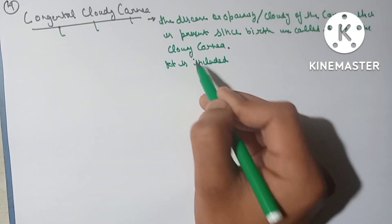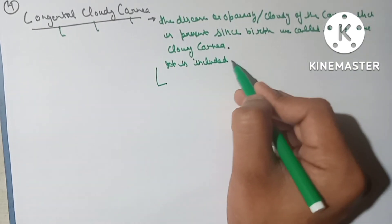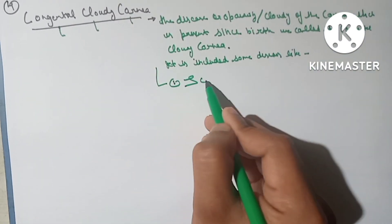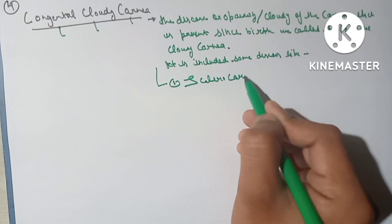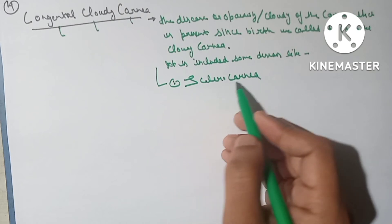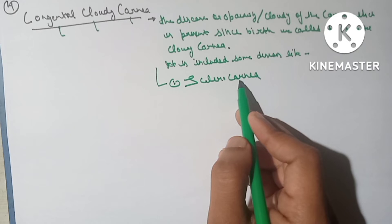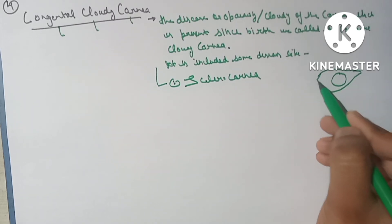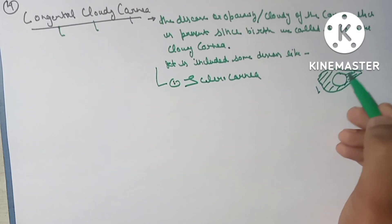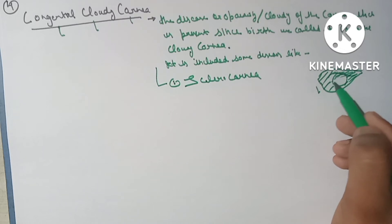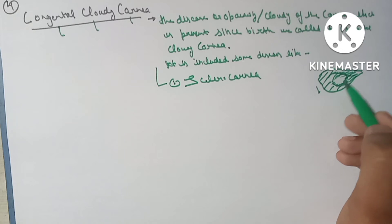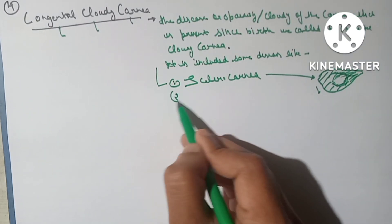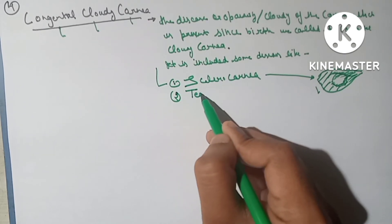Congenital clouding of the cornea includes several conditions. The first is sclerocornea — a congenital anomaly in which part of the cornea acquires the characteristics of the sclera. In this condition, the bulbar conjunctiva covers the cornea and the whole cornea acquires the characteristics of sclera, so the condition is known as sclerocornea.